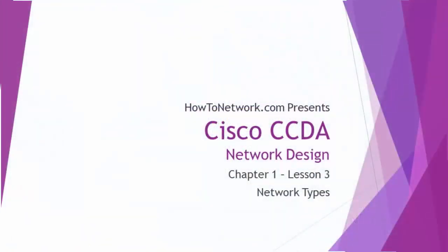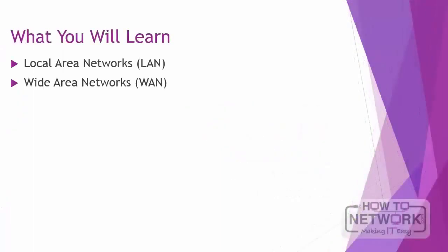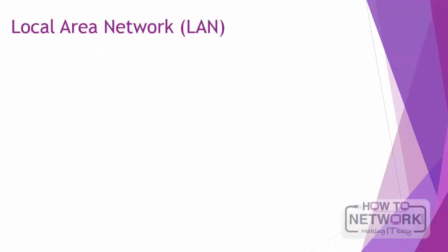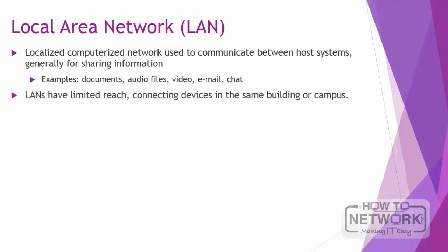Hi, this is David Voss, CCIE 11372. In this video you are going to learn about network types — specifically wide area and local area networks. Local area networks are local computer networks used to communicate between host systems, generally for sharing information such as documents, audio files, video, and email. They have limited reach and connect devices generally in the same building or campus, and are usually private networks belonging solely to the companies in which they are deployed.